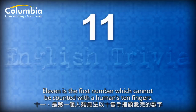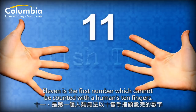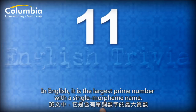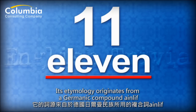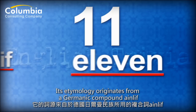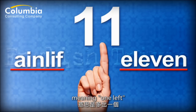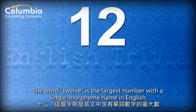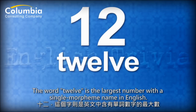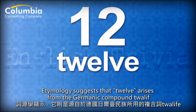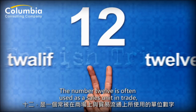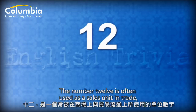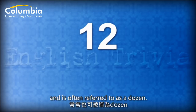Eleven is the first number which cannot be counted with a human's ten fingers, and in English it is the largest prime number with a single morpheme name. Its etymology originates from a Germanic compound, 'ein liff,' meaning 'one left.' The word twelve is the largest number with a single morpheme name in English, arising from the Germanic compound meaning 'two left over.' The number twelve is often used as a sales unit in trade and is referred to as a dozen.